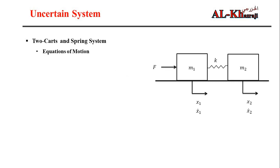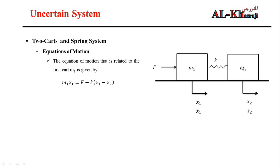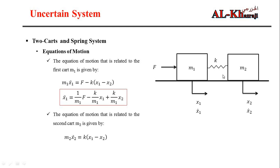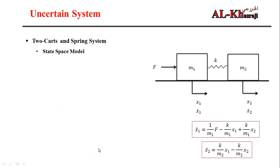Based on Newton's second law, we derive the differential equations of the system separately for each mass. For the first mass, the force equals the applied force minus the spring force, rearranged so that x1 double-dot is isolated. For the second mass, m2 * x2_double_dot equals the spring force k*(x1 - x2), and we rearrange that equation similarly. These two equations are the basis for deriving the state space model.